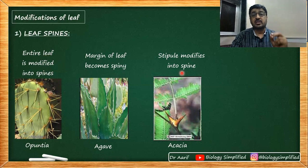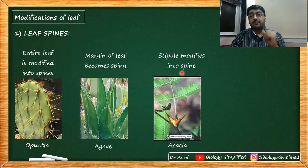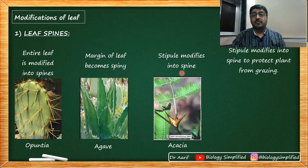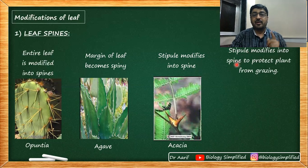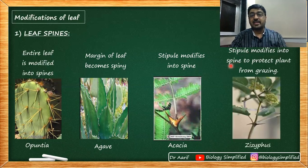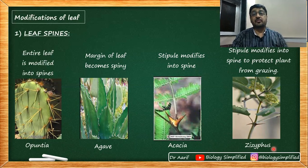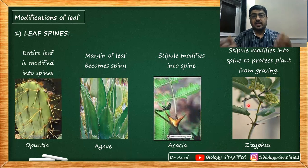All three modifications help the plant by reducing or eliminating transpiration. The fourth case: stipule modifies into spine to protect the plant from grazing — as in the case of Ziziphus. So we have four examples where the leaf modifies into a spine: entire leaf to spine, leaf margin to spine, stipule to spine for transpiration, and stipule to spine for protection from grazing.